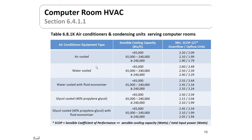For computer room HVAC, the requirements are specific and relate to the sensible coefficient of performance — not including the latent cooling capacity, just the sensible COP, which is BTUs of cooling versus the BTUs of energy put into the system. Equipment types covered include air-cooled, water-cooled, glycol-cooled, and others, with different efficiencies shown in the right-hand column.